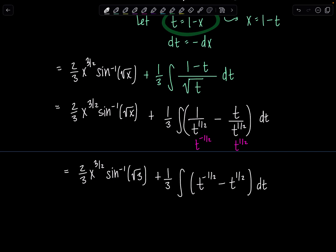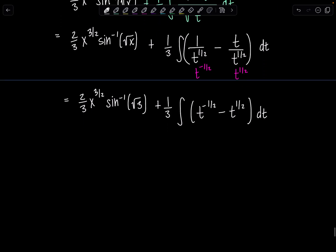And then at long last, let's go ahead and take that antiderivative. So here we've got 2 thirds x to the 3 halves sine inverse of rad x, then plus 1 third. Antiderivative of t to the 1 half, add 1 to the exponent, divide by the new exponent. And then minus, I'm going to distribute that 1 third. Again, add 1 to the exponent. It's going to be 3 halves, divide by the new exponent, 2 thirds, plus c.